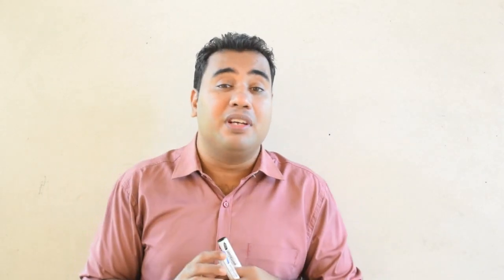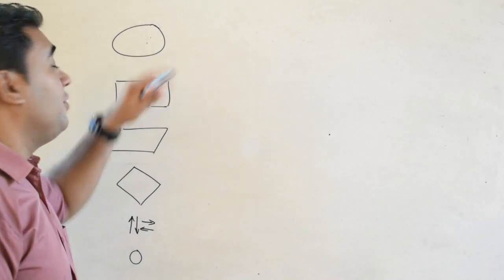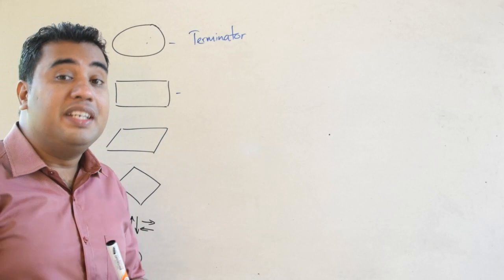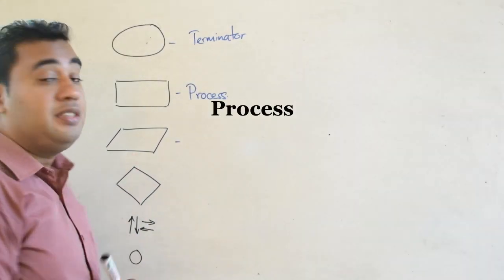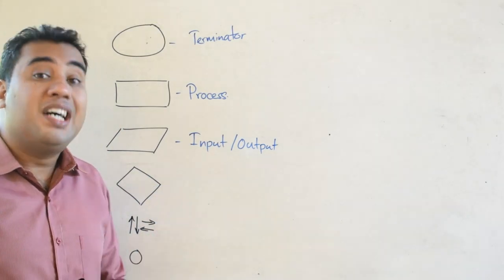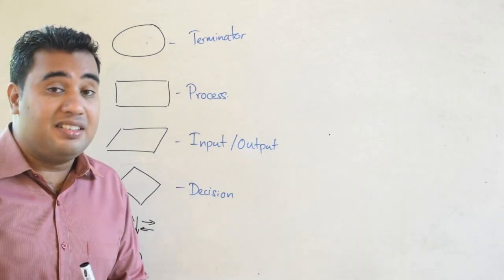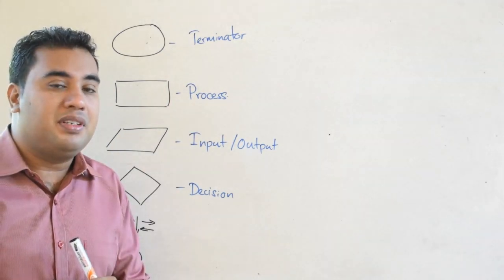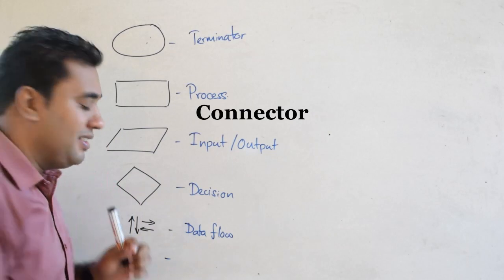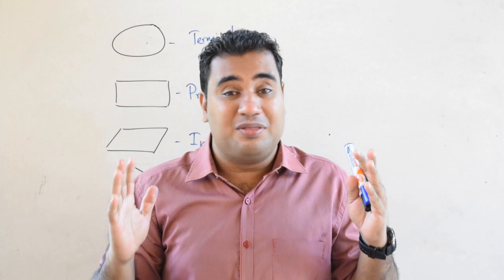In this lesson we are going to learn about the flowchart, the graphical representation of an algorithm. Since the flowchart is a graphical representation, we use symbols to represent the steps. The first symbol is used as a terminator — the start and the end. The next symbol is used for processes, and this one for inputs and outputs. This symbol here is used for decisions — we'll discuss these symbols in detail later. These arrows are used for data flows, and a simple circle is used as a connector. These are the six basic symbols used to represent algorithms using flowcharts.